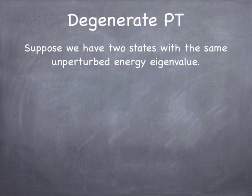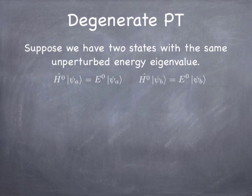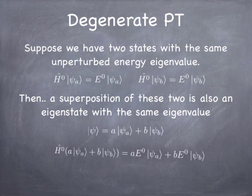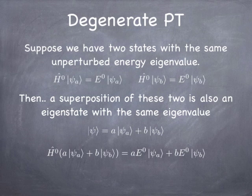The idea is: what if we have two states in the unperturbed system that have the same energy? For example, state A has energy E0, and state B also happens to have the same energy. A superposition of these two states is also an eigenstate with the same energy. They form a two-dimensional subspace where any superposition also has the same eigenvalue of energy.